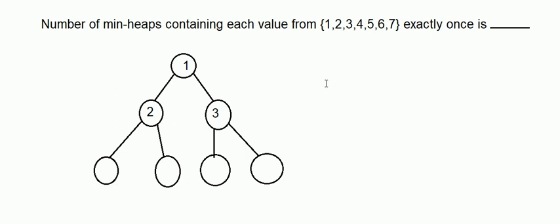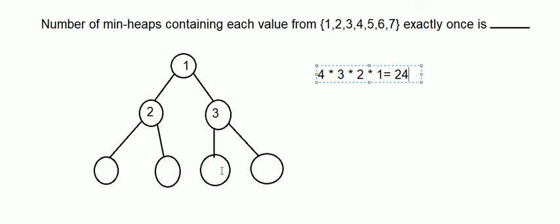In that case, the total number of possible min-heaps is 4 × 3 × 2 × 1, which equals 24. So when 1 is at the root, 2 is here, and 3 is here, the total number of min-heaps is 24, because those 4 positions can be filled by any permutation of the values 4, 5, 6, and 7.